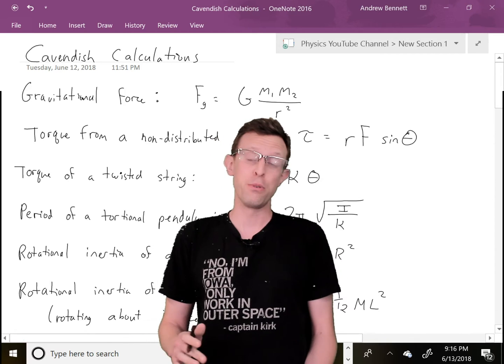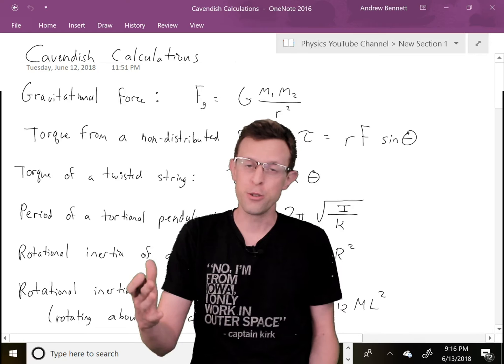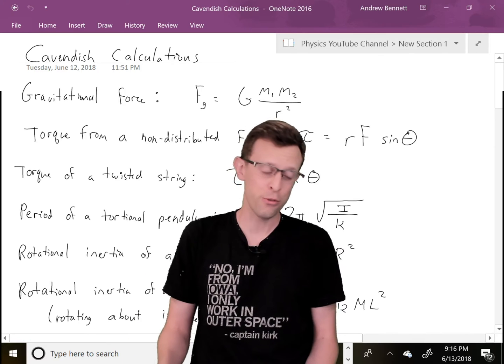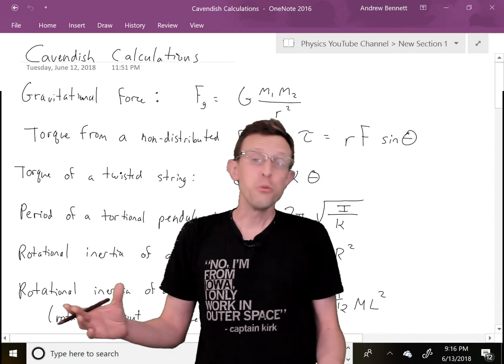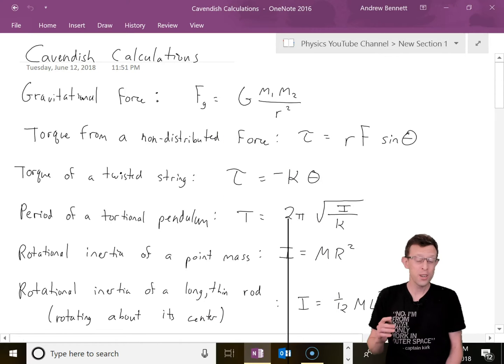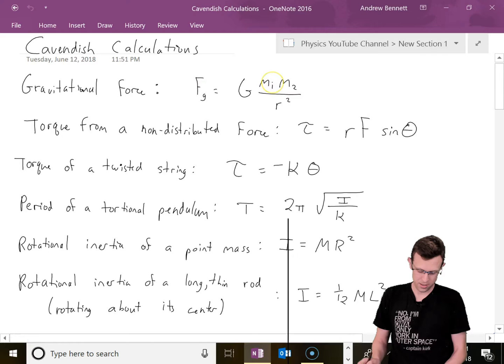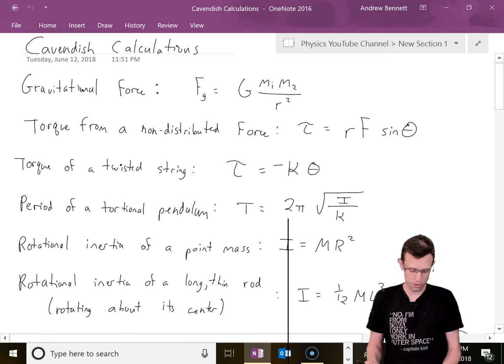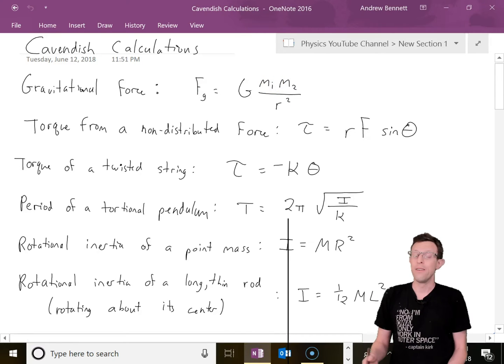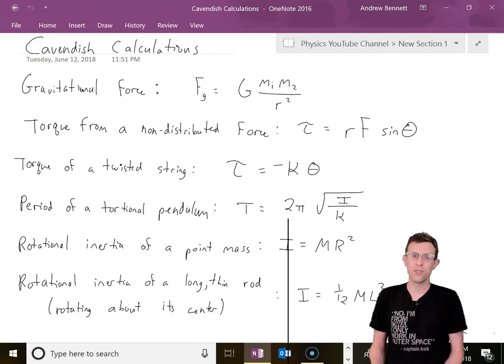Cavendish comes up with this brilliant idea to measure the gravitational constant. There's a huge amount that all has to come together to make this experiment work. First off we've got the law of universal gravitation here, Fg equals Gm1m2 over R squared. We're looking for G, that's where the constant shows up.